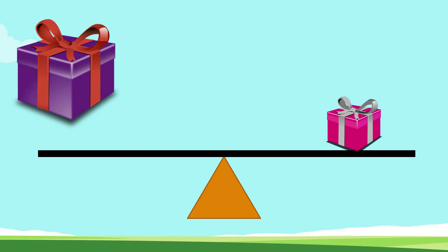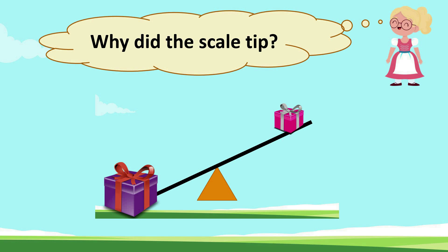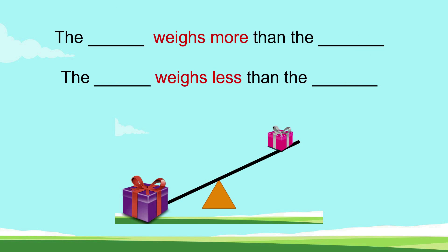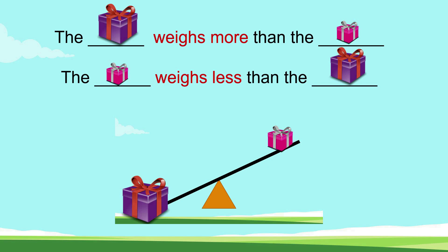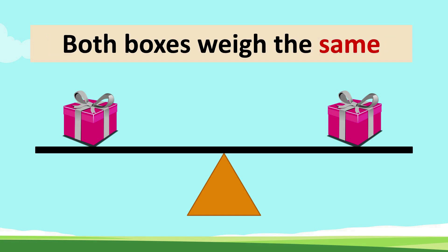Now look at the balance scale. We placed a bigger box on the other side. Why did the scale tip? Both boxes have mass. What can we say about the boxes? The big box is heavier than the small box. The small box is lighter than the big box. The big box weighs more than the small box. The small box weighs less than the big box. Both boxes weigh the same when balanced, therefore the scale is balanced.